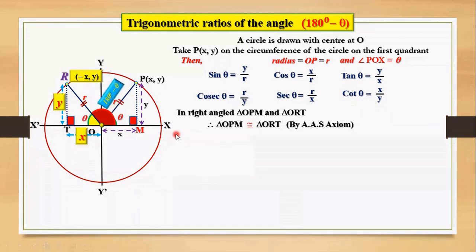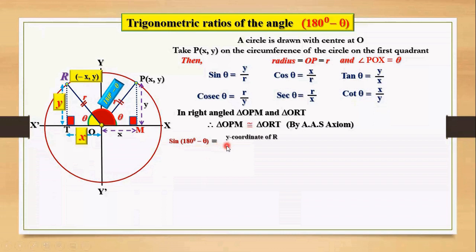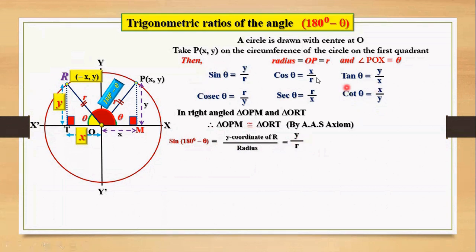So we write angle XOR equals 180 degrees minus theta. We are going to find the trigonometric ratios of this angle 180 degrees minus theta. The first ratio is sin(180° - θ). Its formula is y-coordinate of R by radius. We take the y-coordinate of R because R lies on the terminating line of the angle 180 degrees minus theta. Y-coordinate of R is y and the radius is r, so we have y by r. Now y by r is the ratio of sin theta, so we replace y by r with sin theta, giving sin(180° - θ) = sin θ.